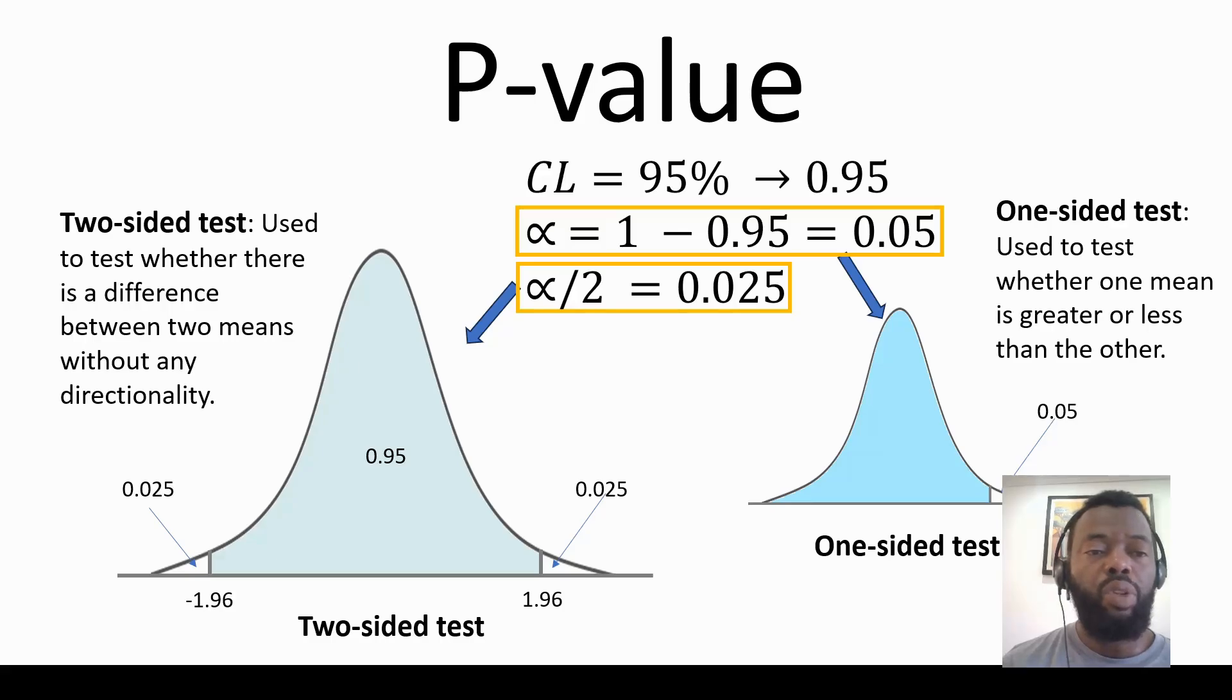Two-sided test is used to test whether there is a difference between two means without any directionality. When we compare the two means and the p-value falls in this area, it means that there is no significant evidence of the difference and we don't reject the null hypothesis.